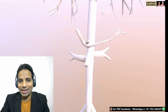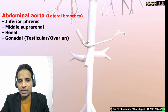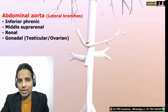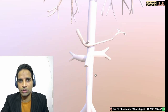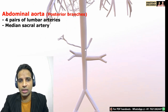The lateral branches of the abdominal aorta include the renal artery prominently, and above it the inferior phrenic artery and the middle suprarenal artery to supply the suprarenal gland. Below the renal artery is the gonadal artery — testicular artery in males and ovarian artery in females. The posterior branches include four pairs of lumbar arteries, and near its termination, a branch called the median sacral artery on the posterior aspect.